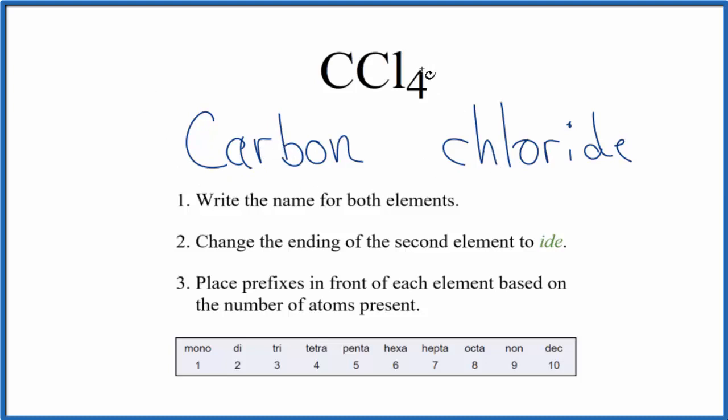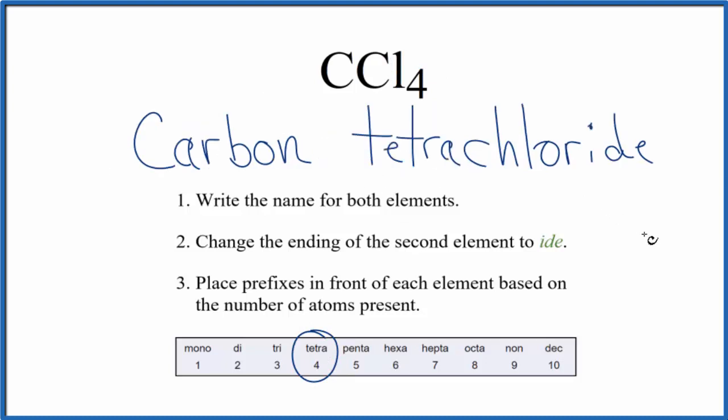For the chloride, we have four of these chlorine atoms, so we're gonna put tetra in front of the chloride. And that makes the name for CCl4 carbon tetrachloride.